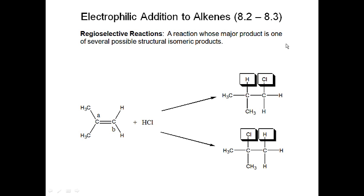In electrophilic addition, you're adding two parts: an electrophile and a nucleophile. When you add the electrophile to one carbon and the nucleophile to the other, and vice versa gives two different products, this introduces the idea of reactions that are regioselective. Regioselective reactions are reactions where you have a major product, and that major product is one of several possible structural isomers.